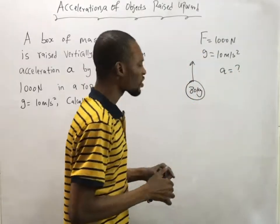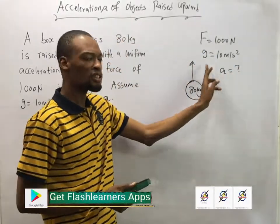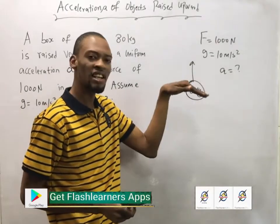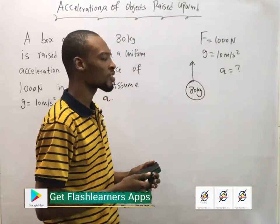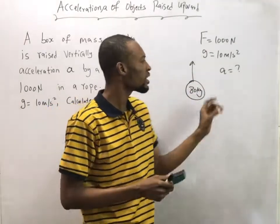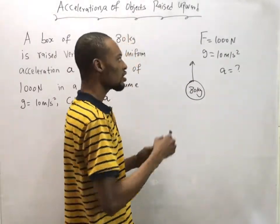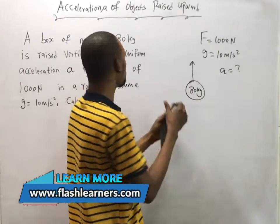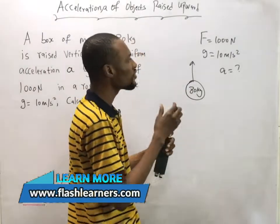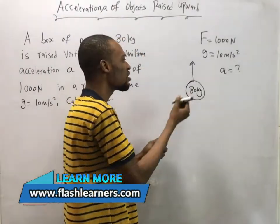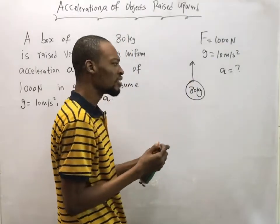Now you look at this question. We are given acceleration due to gravity, we are asked to find acceleration that it is raised with. How do you go about this type of question? Now take a look at it. The box was raised up with a force of 1000 Newton.